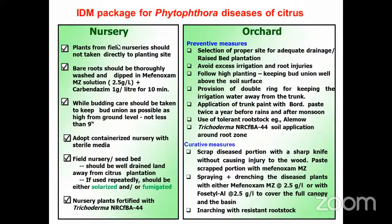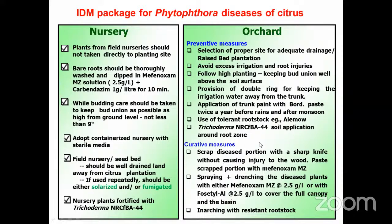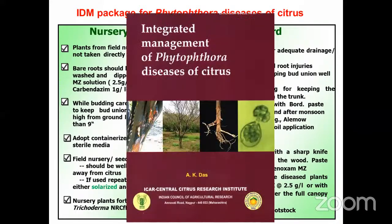This is the IDM package — for Phytophthora disease, no single method will be enough; integrated disease management is essential. All management and control measures have been put into a capsule format. In the nursery, starting with soil solarization and other treatments, and at the orchard level, both preventive and curative measures can be undertaken for the control of different Phytophthora diseases. A publication on integrated management of Phytophthora diseases has also been released.